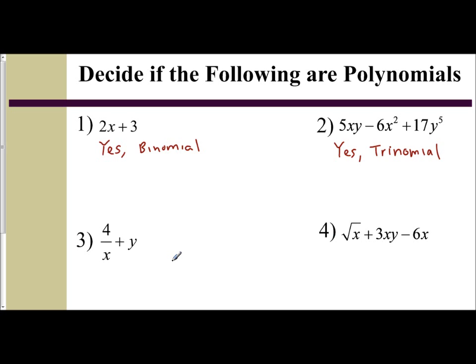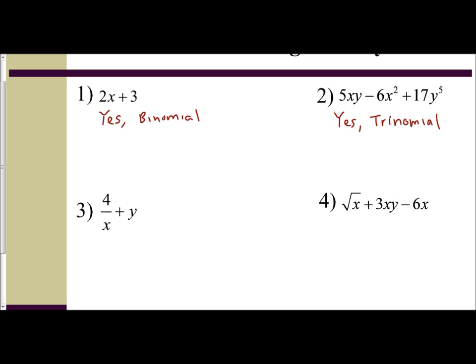But let's look at number 3, 4 over x plus y. Our variable is in the denominator, and when we define a polynomial, we said the variable cannot be in the denominator. You cannot be performing division with the variable underneath the fraction. So this is not a polynomial.